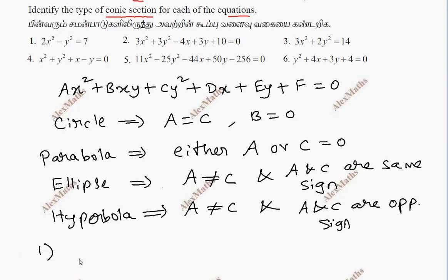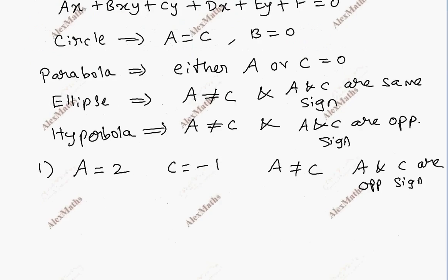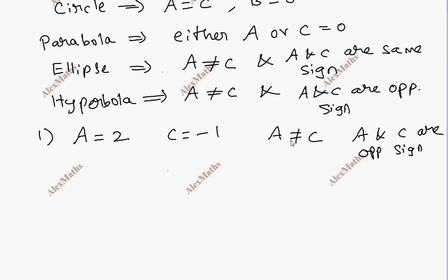First subdivision: A value is 2 and C is minus 1. So A and C are not the same sign. Looking at the condition for a hyperbola — that is A not equal to C and A and C are opposite sign — therefore the conic is a hyperbola.